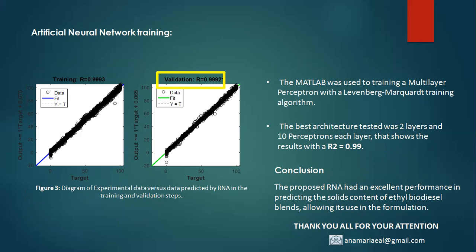The proposed artificial neural network had an excellent performance in predicting the solid content of biodiesel blends, allowing its use with confidence in the formulation of mixtures with low solid content that can be used at low temperatures.